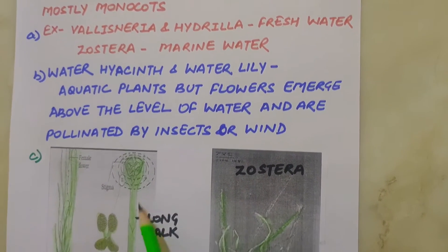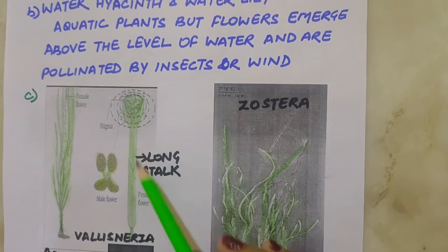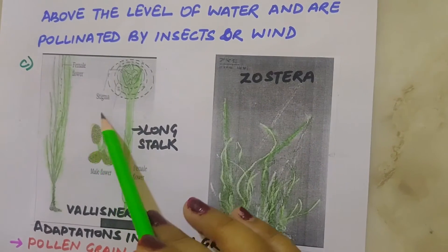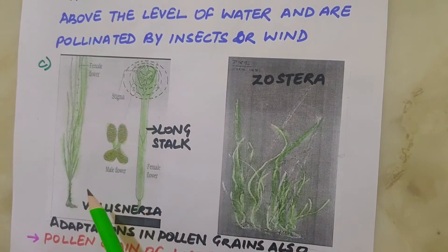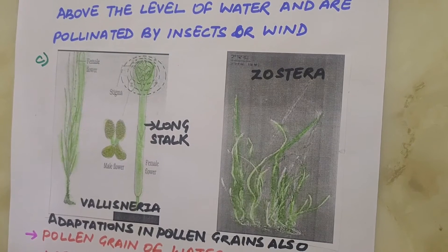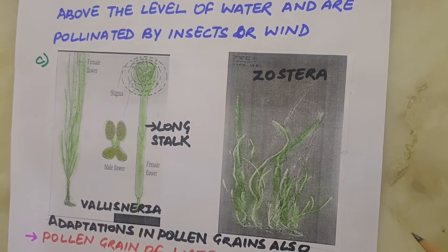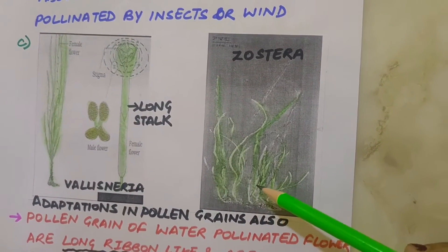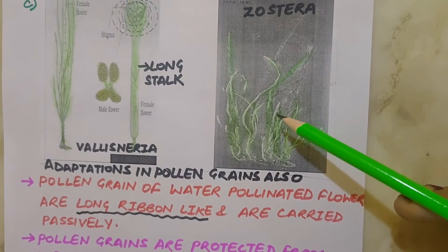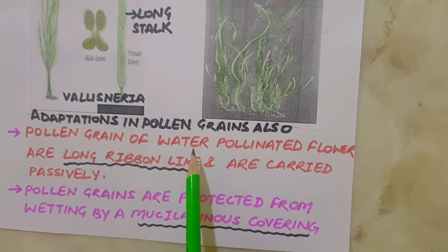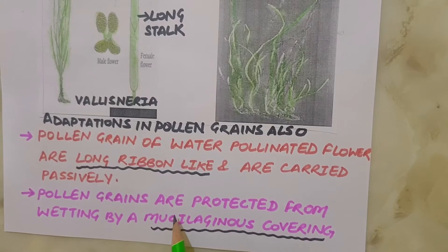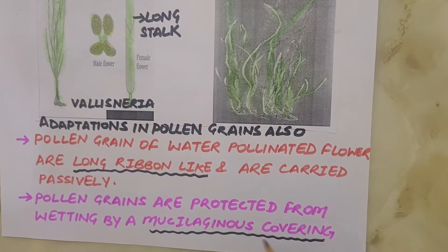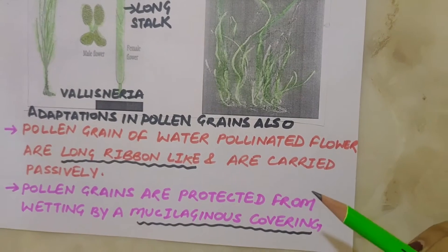In Vallisneria, the female flower reaches the surface of the water by a long stalk, and male flowers or pollen grains are released onto the surface of the water. They are carried passively by water currents and some of them eventually reach the female flower and the stigma. In another group of water-pollinated plants such as seagrasses, female flowers remain submerged in water and the pollen grains are released inside the water. Pollen grains in many such species are long, ribbon-like, and carried passively inside the water. In most water-pollinated species, pollen grains are protected from wetting by a mucilaginous covering.